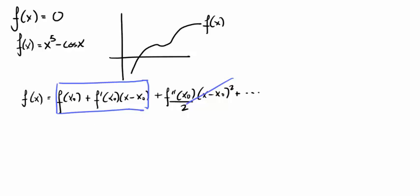We can represent this graphically. Suppose that this point here is x0. The boxed terms are the equation of the tangent at x0, which is a good approximation near to this point.